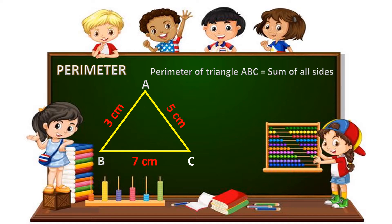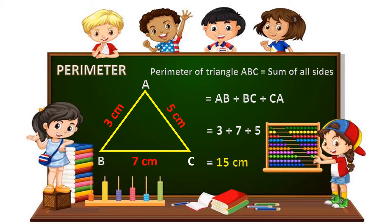if a triangle has sides A, B, and C, then the perimeter of that triangle ABC equals the sum of all sides: AB plus BC plus CA. AB equals 3 cm, BC equals 7 cm, and CA equals 5 cm. So, 3 plus 7 plus 5 equals 15 cm.